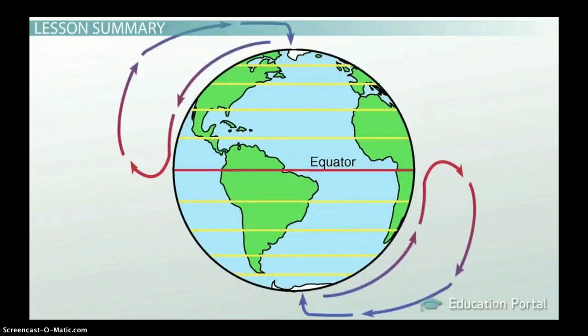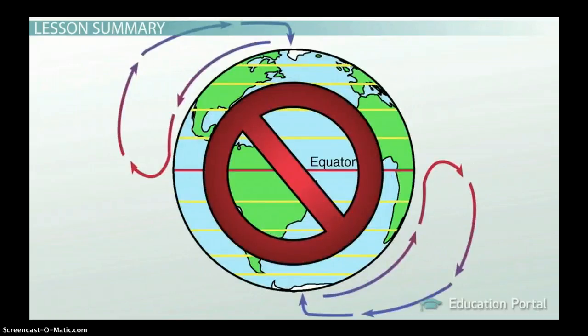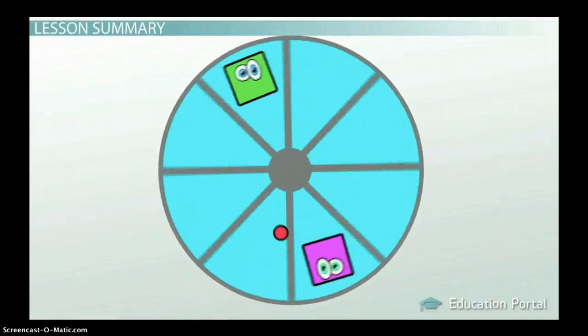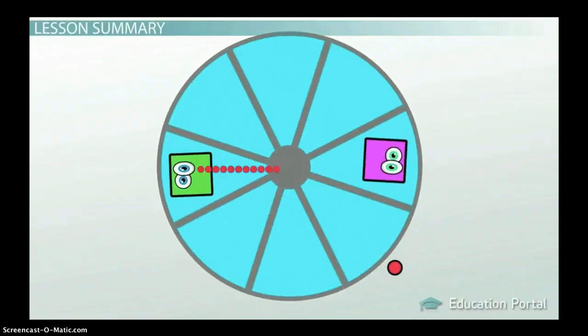Earth's rotation means that air does not circulate in a single cell convection current for each hemisphere. Instead, we get multiple air cells and the Coriolis effect, which is the apparent deflection of wind due to Earth's rotation. Like throwing the ball to your friend on the merry-go-round as it spins, wind actually travels in its same straight-line path, but when observed from above appears to deflect to the right in the northern hemisphere and the left in the southern hemisphere.